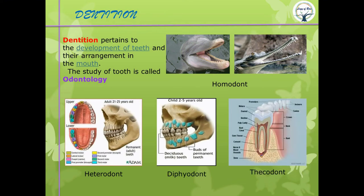Dentition pertains to the development of teeth and their arrangement in the mouth. Study of teeth is called odontology. Animals like gharials and dolphins are homodont — homo means similar, so they have similar-type teeth. Humans are heterodont — hetero means different — we have different types of teeth: canines, premolars, molars, etc.